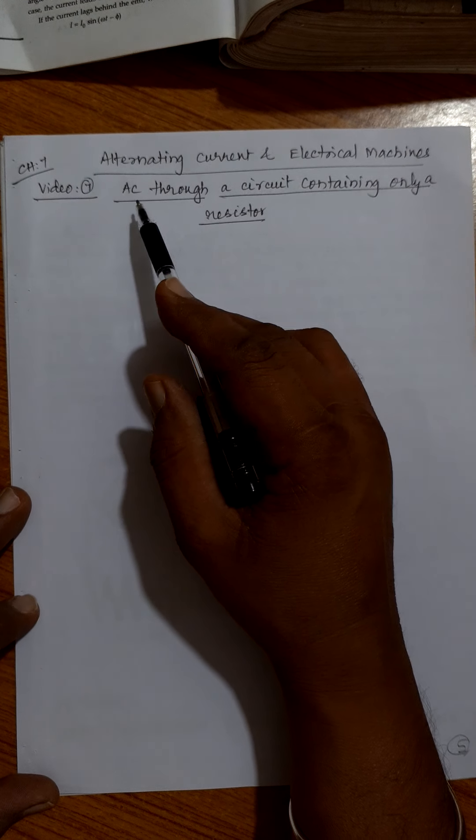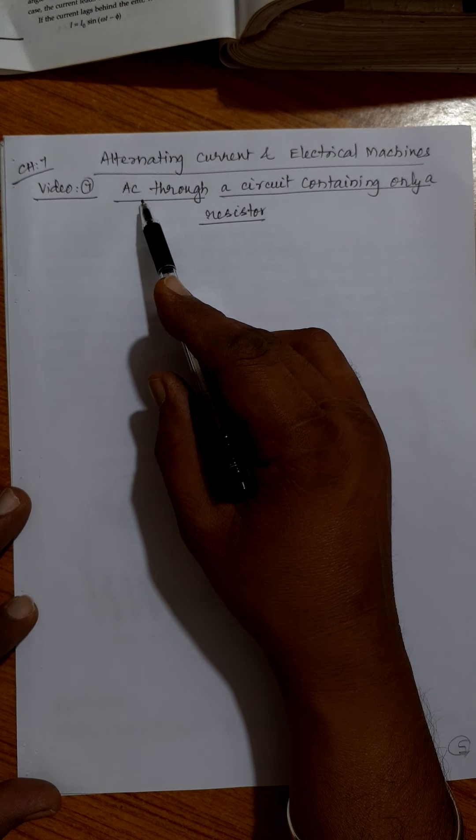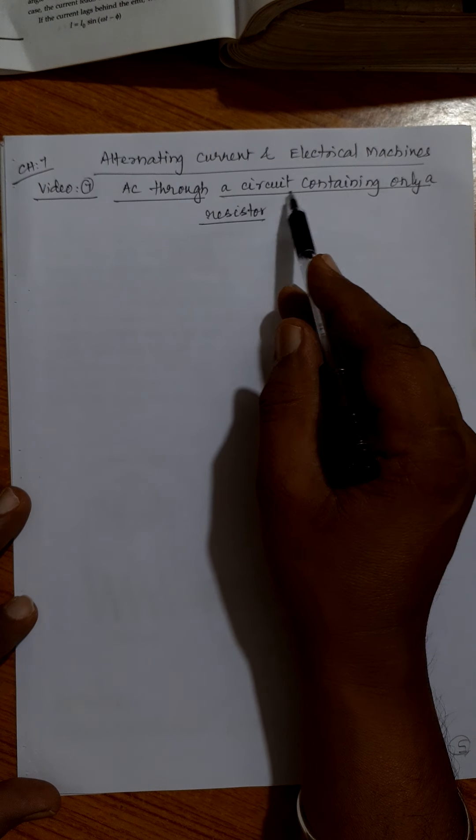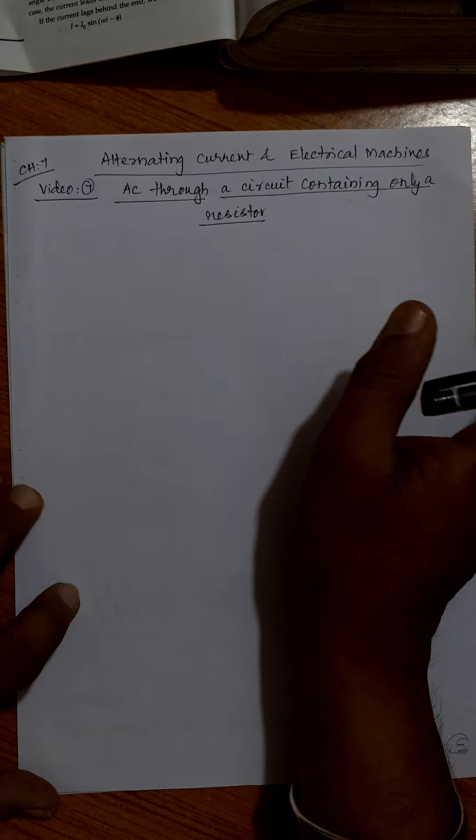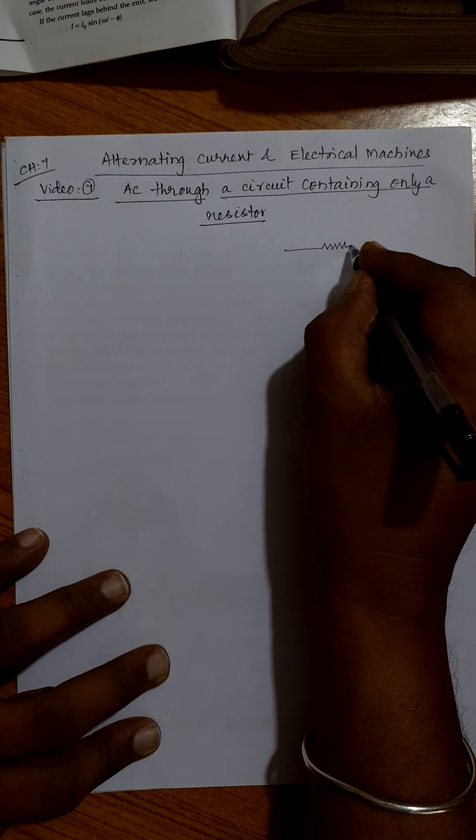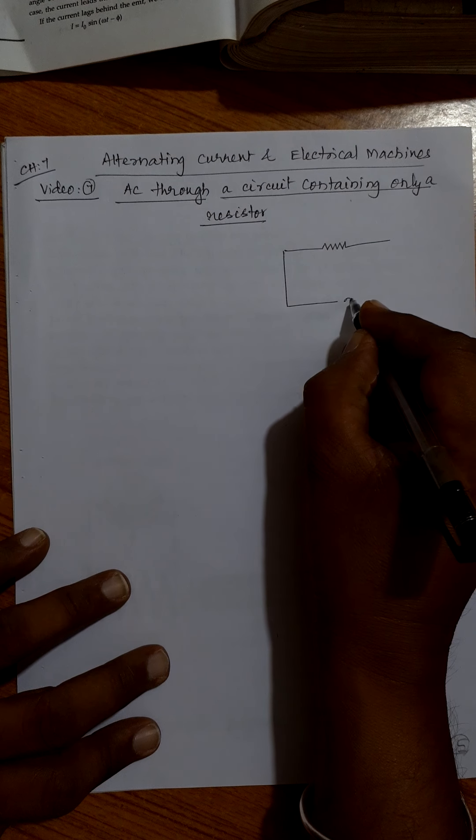Hi children, we are in Chapter Number 7, Alternating Current and Electrical Machines. This is Video Number 7 in which I am going to discuss an alternating current when it is passed through a circuit containing only a resistor.